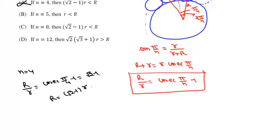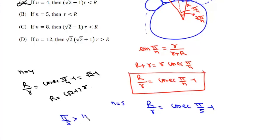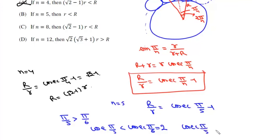For option B, we put n = 5. We get r/R = csc(π/5) − 1. Now π/5 is greater than π/6, and since cosecant is a decreasing function, csc(π/5) is less than csc(π/6), which equals 2. So csc(π/5) − 1 is less than 1, meaning r should be less than R. Option B is also incorrect.